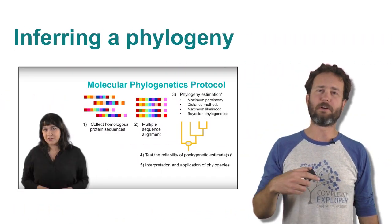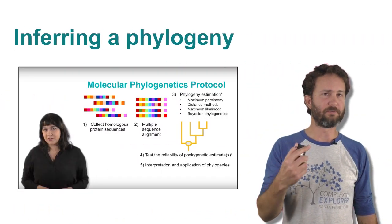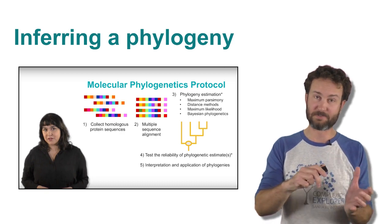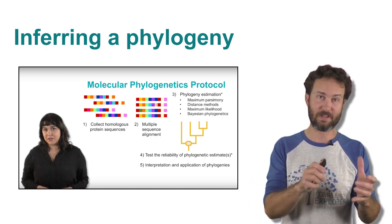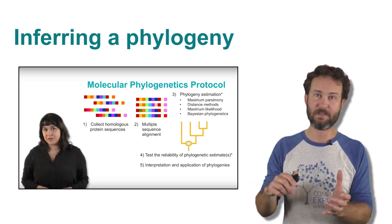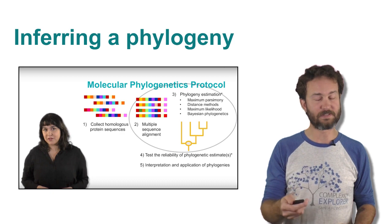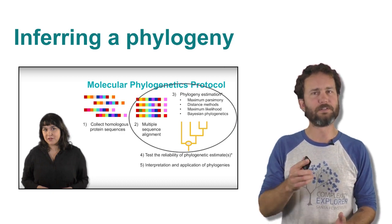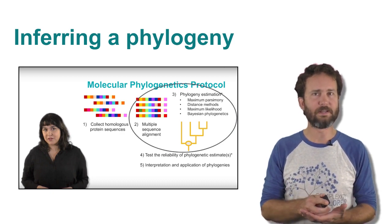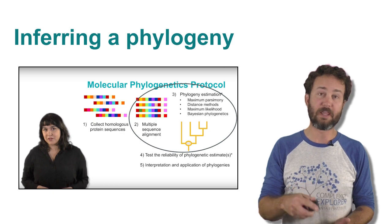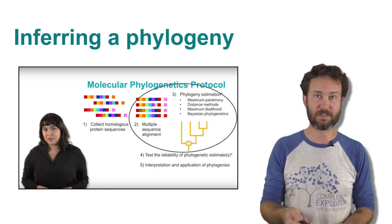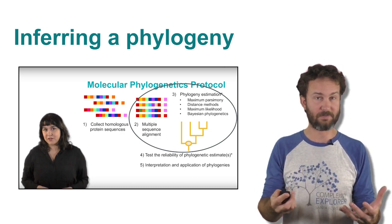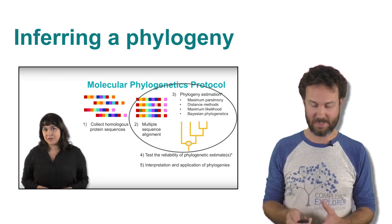Professor Kachar already gave us a great overview of how to use phylogenies to travel through time and infer the past. So in this lecture, I want to specifically go into more detail on the actual inference process — how do we estimate a phylogeny from the data at hand?